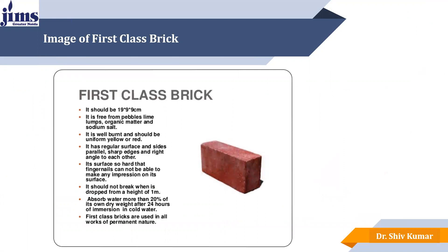The dimension of the first class brick should be 19 x 9 x 9 cm. It should be free from pebbles, lime and other kinds of organic materials. It should be well burnt and red in color. It should not absorb water more than 20% of its dry weight.